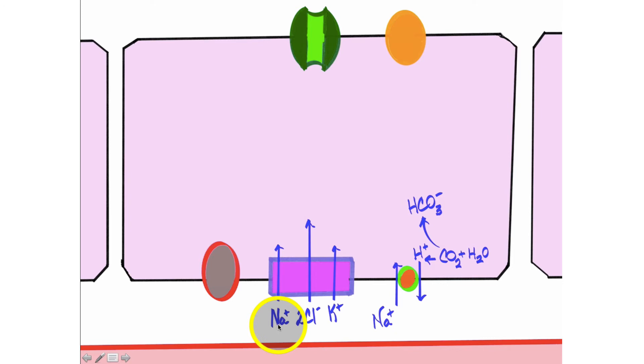Then what we get is the sodium potassium chloride co-transporter. All of these ions, sodium chloride and potassium will move into the cell via the sodium potassium chloride co-transporter, otherwise known as the NKCC.